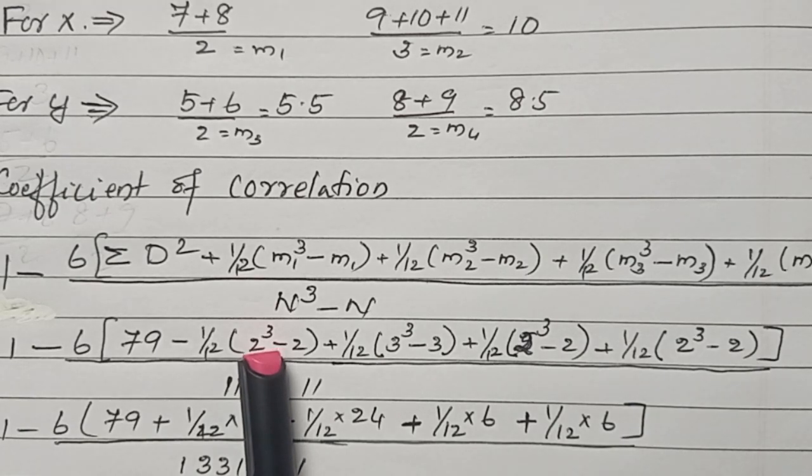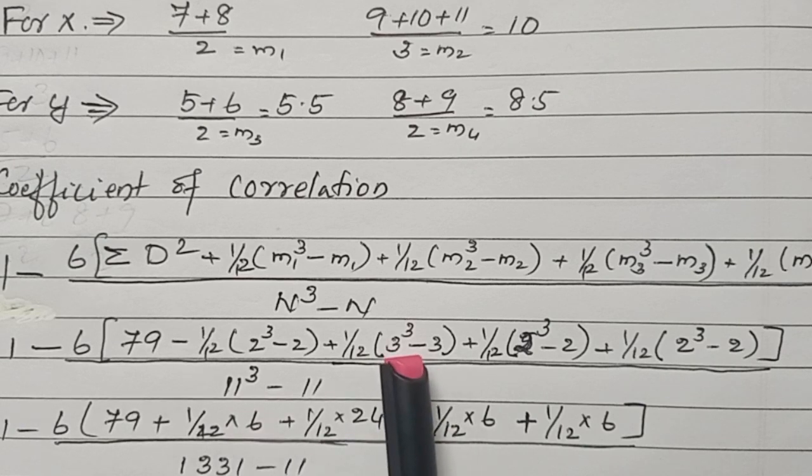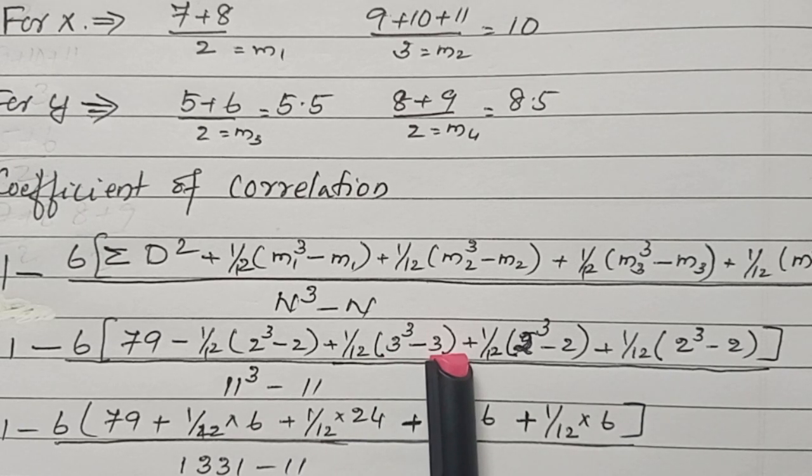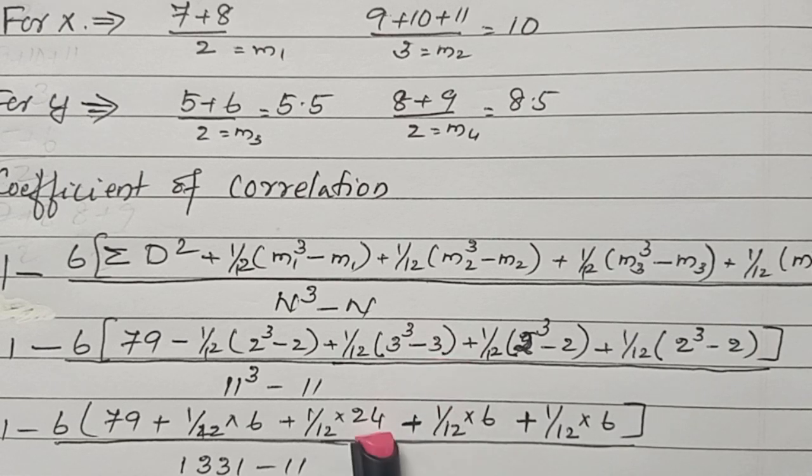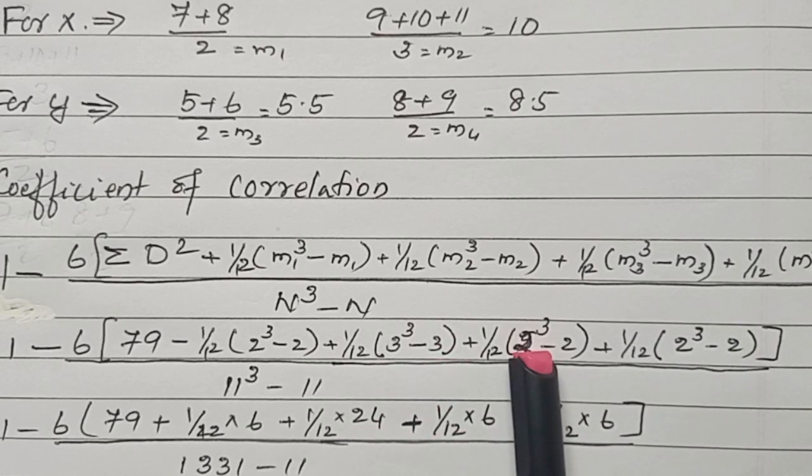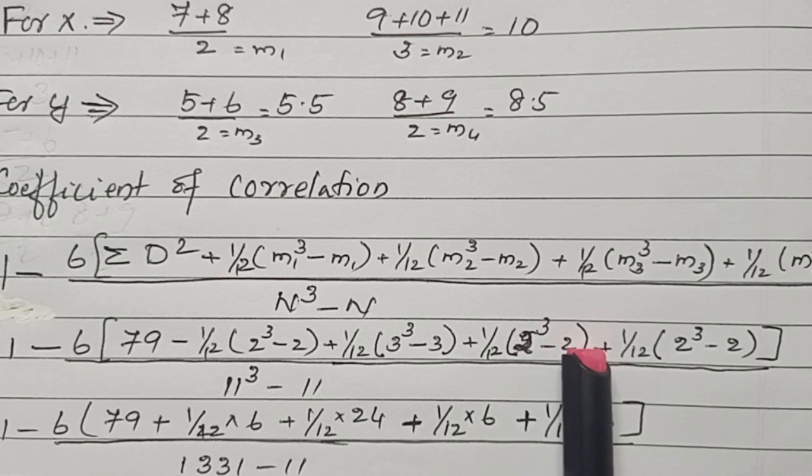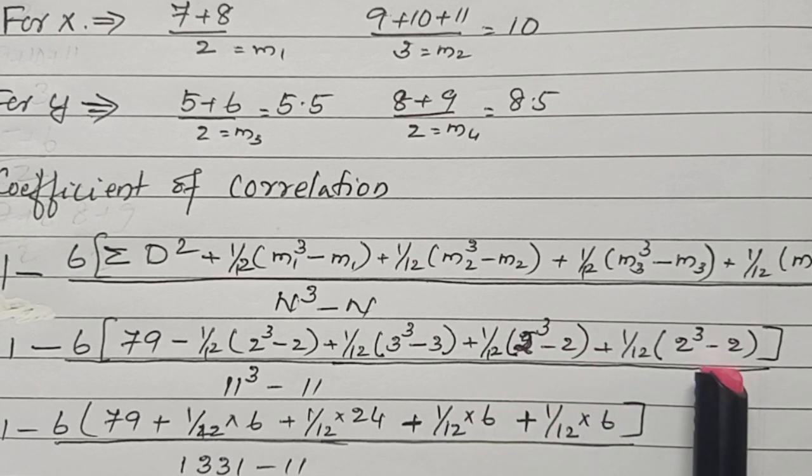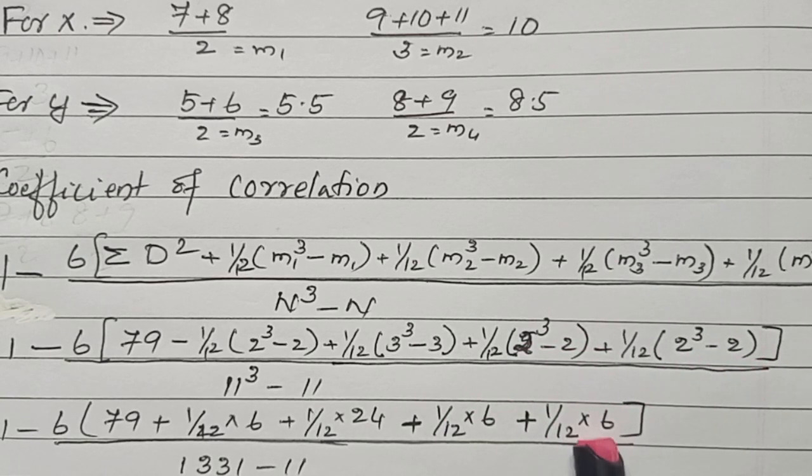Substituting values: 2 cubed, that is 2 into 2 into 2 equals 8 minus 2, that is 6. Then 3 cubed is 27 minus 3 equals 24. 2 cubed is 8, 8 minus 2 is 6. 8 minus 2 is 6.